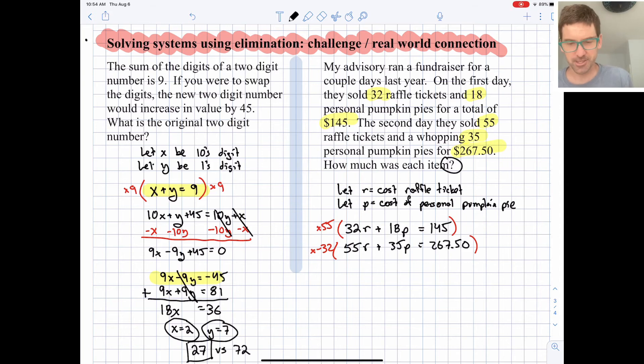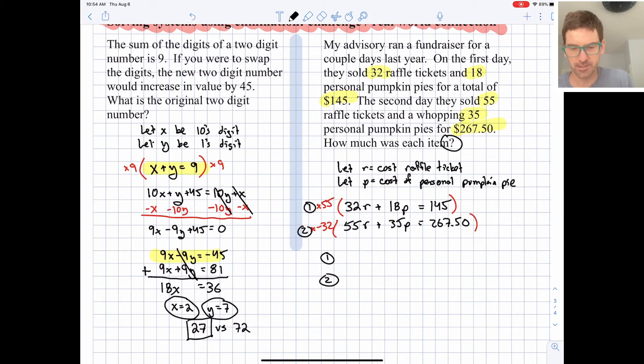So the first equation is going to turn, and sometimes when we're solving systems, we like to keep things organized by numbering our equations. And I'm just going to number them as 1 and 2, and then try to keep things organized that way. So 55 times 32, the first equation turns into 1760r plus 990p equals 7975. So that's just sort of a scaled up version of my first equation.